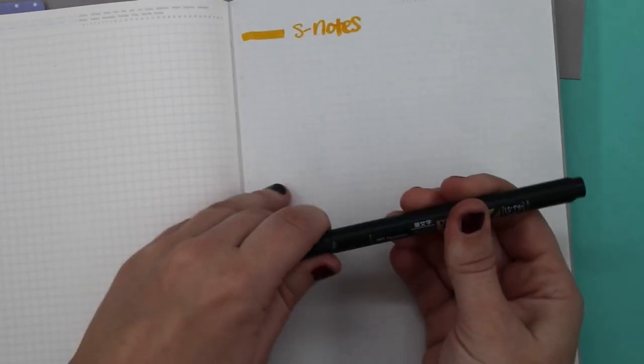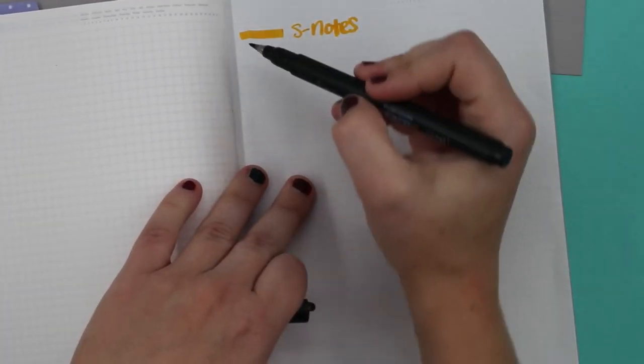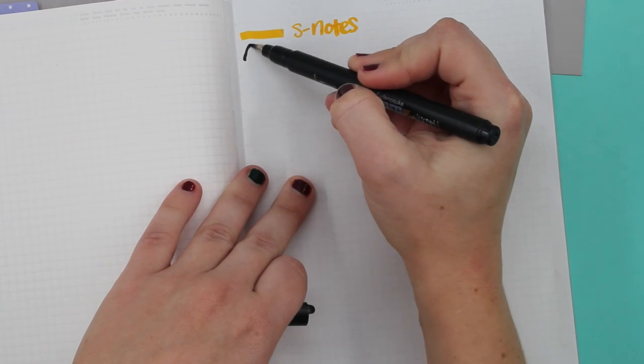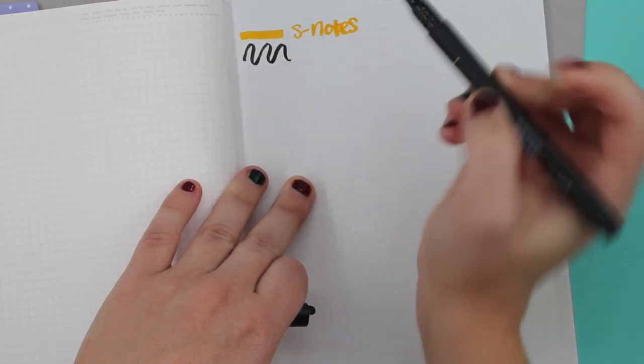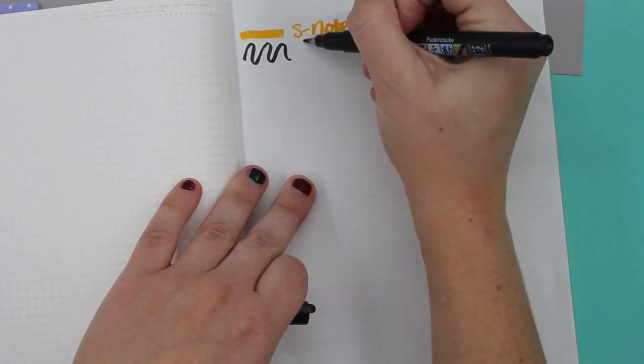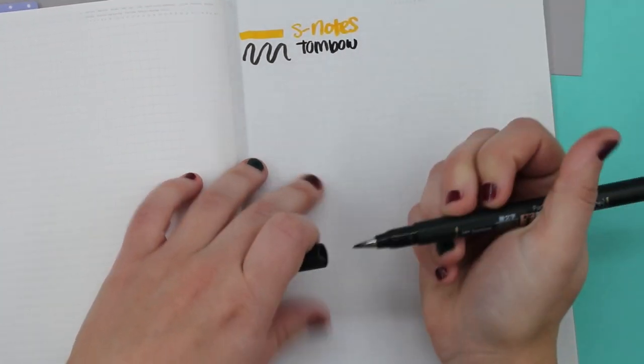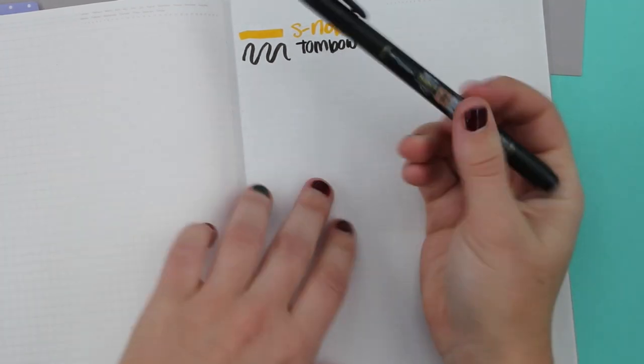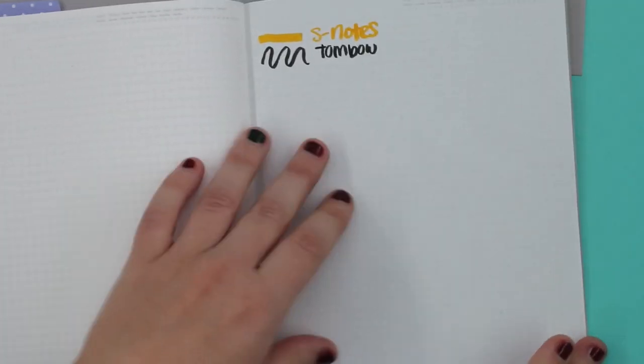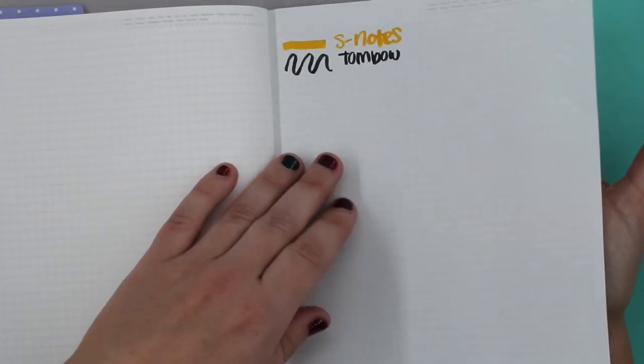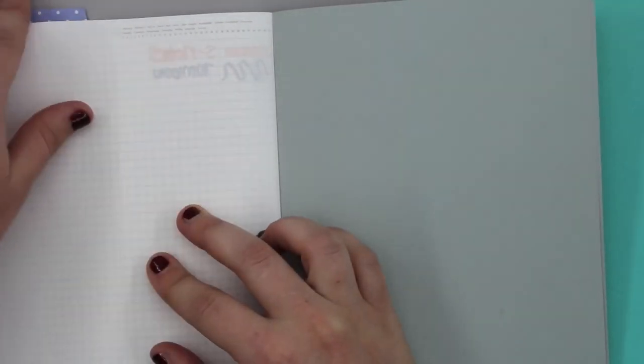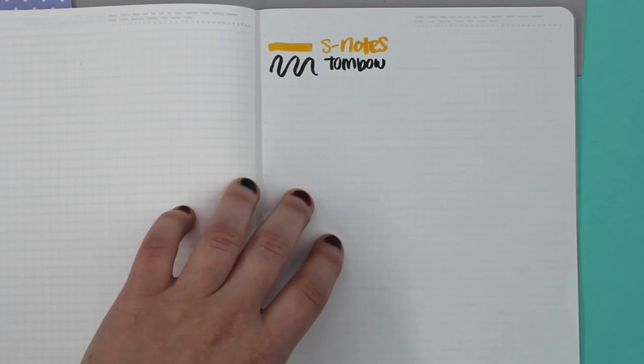Now let's move on to the Tombow. So this is a brush pen. I'm working on my brush pen, so I'm not the best. So this is a Tombow. So it's a little scratchy if you're writing, but this is not going to be your normal writing pen. So looks good. Ghosting, but no bleed through. So we are an A plus on the Tombow.